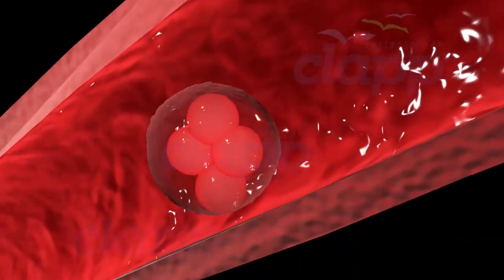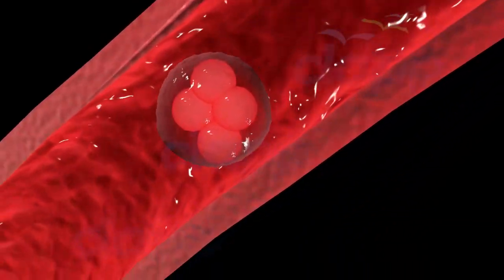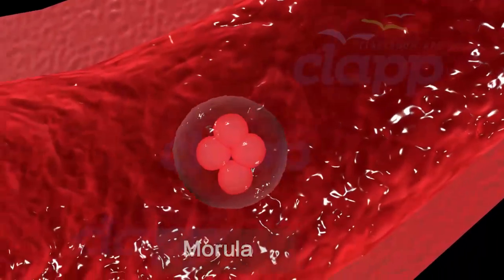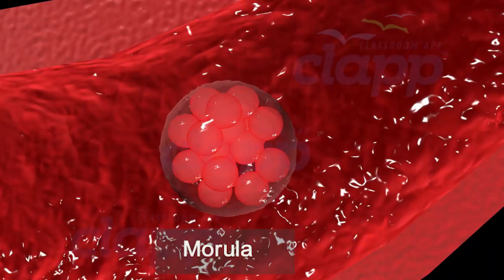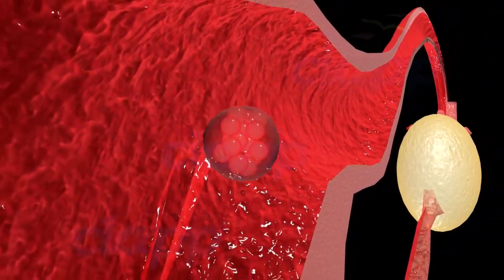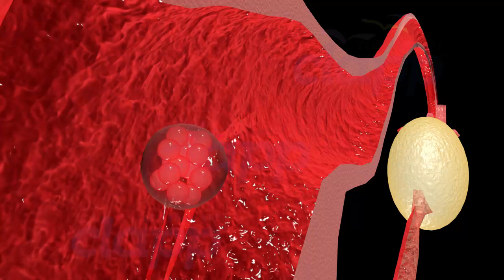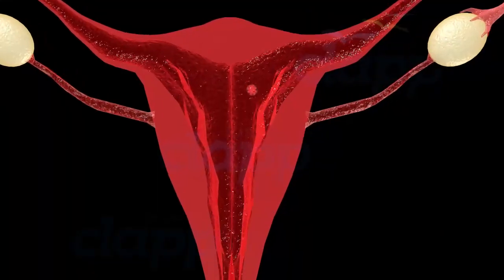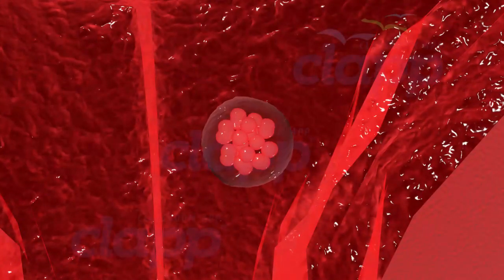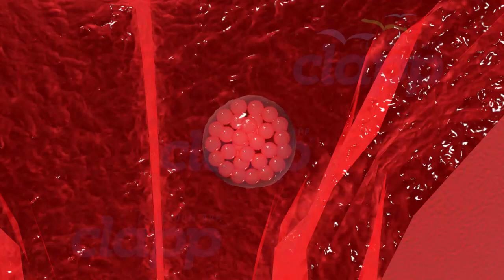On the third day of fertilization, the embryo reaches a count of 16 cells. The structure looks like a mulberry and is called the morula. It is still surrounded by the zona pellucida and reaches the uterus around 4 to 6 days after fertilization. As the morula enters the uterus, it gets a rich supply of nutrients. The outer peripheral cells enlarge and flatten, forming a trophoblast or trophectoderm.